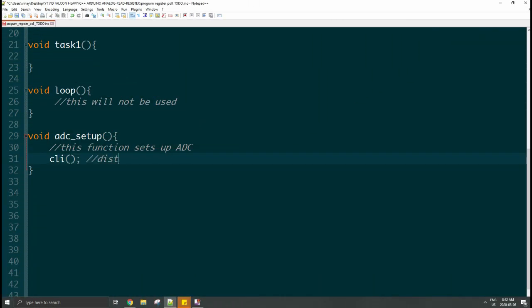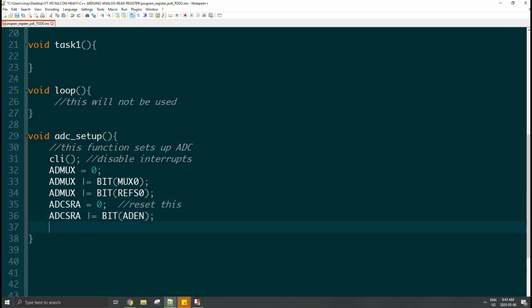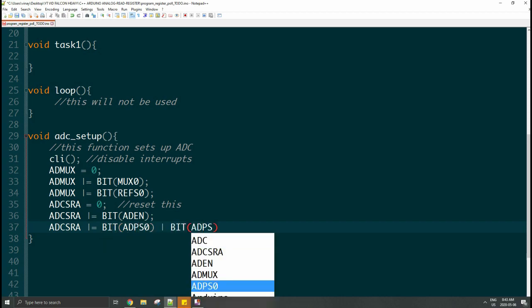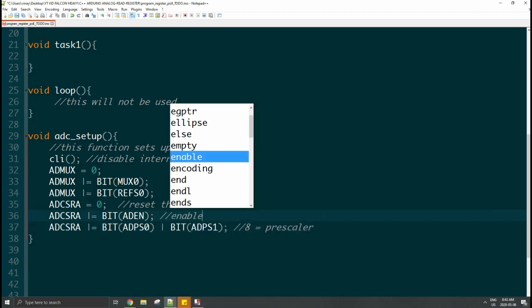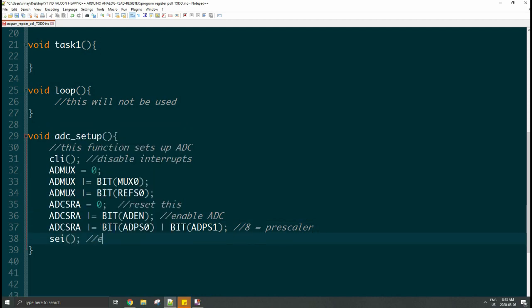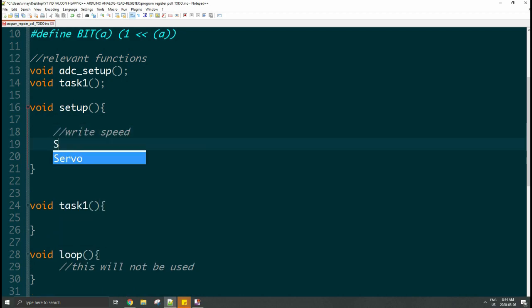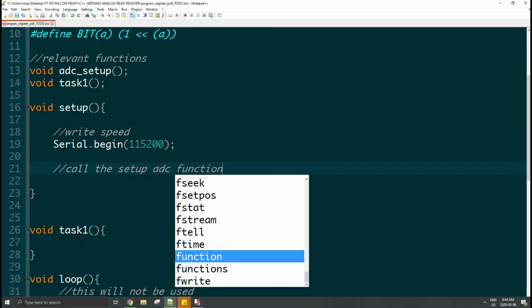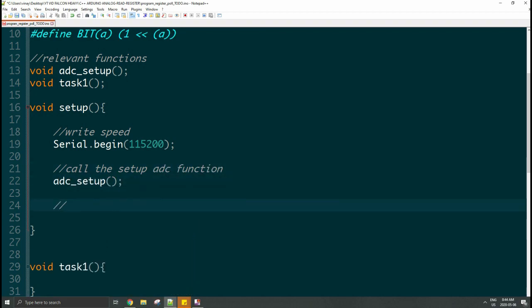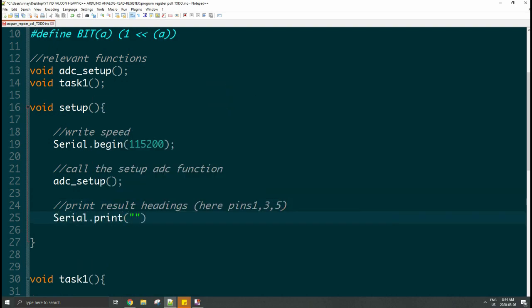We can begin with the C++ program. Let's first activate ADC setup. You first disable interrupts, you reset the ADMUX value, you turn on REFS0, you also reset the ADCSRA and then reactivate it, you set the prescaler, and then you enable interrupts. In your Arduino setup function, you will first specify the baud rate, then you will call the function that will turn on the analog to digital converter, and then you can just print some stuff to the screen.